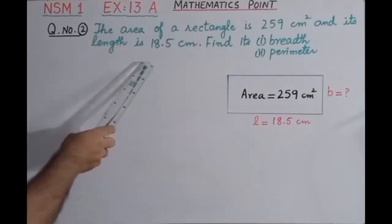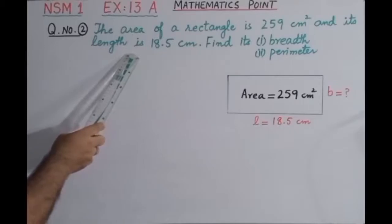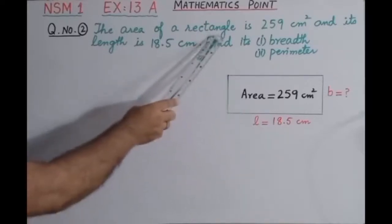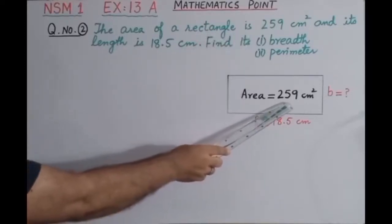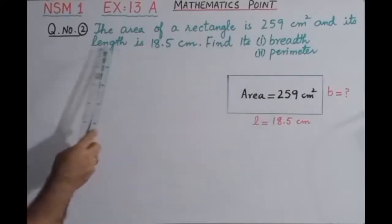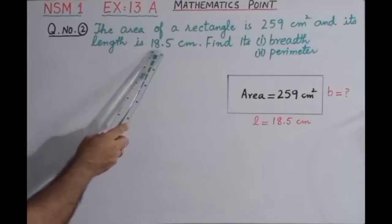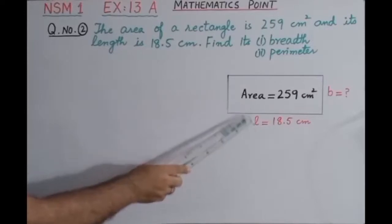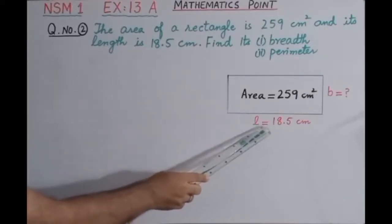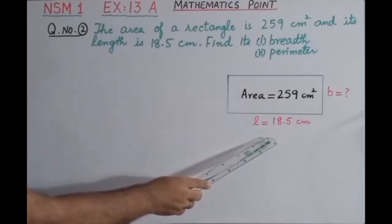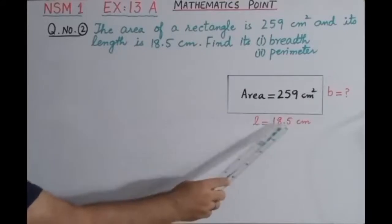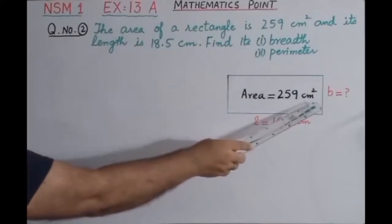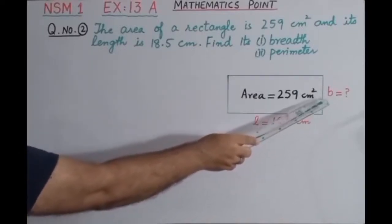According to the given information in question number two, here is a sketch of a rectangle. The area of the rectangle is given as 259 centimeter square, and the length of the rectangle is also given as 18.5 centimeter. Looking at the figure, this side is the length and this side is the breadth. We have to find the value of breadth, so we label it as B.